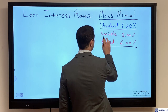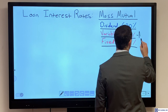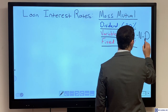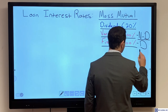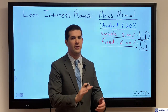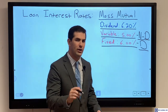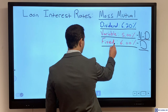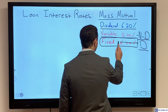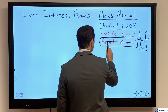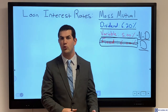A quick side note on the two options: if we elect the variable loan rate, the policy functions as a non-direct recognition policy. If we select the fixed loan rate, the policy will function as a direct recognition contract. On that fixed loan rate, we do not have the ability to use certain riders MassMutual provides to build in flexibility, so we rarely use it.